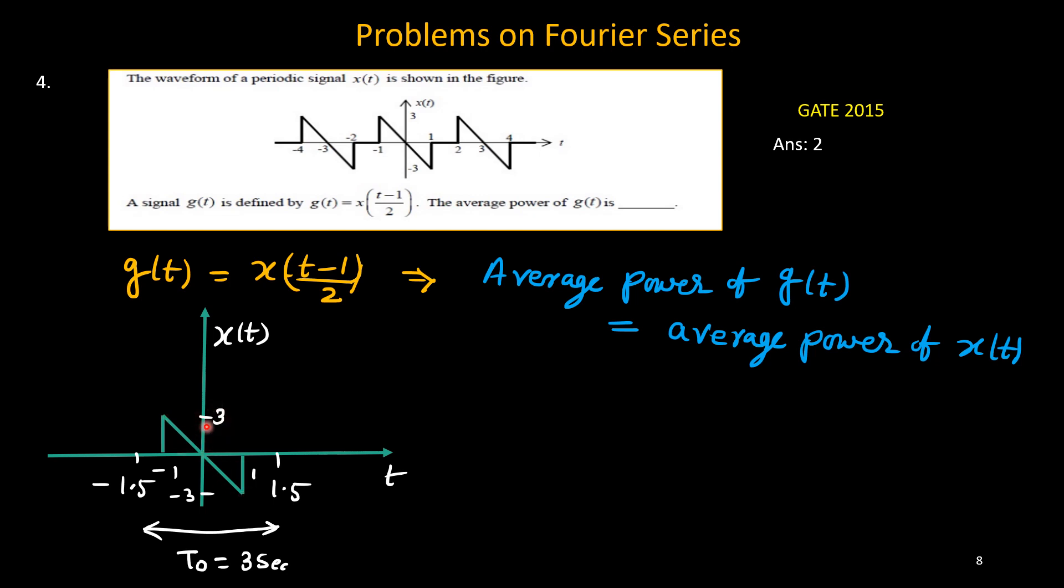So slope is minus 3t because 3 by 1, minus 3 by 1 increasing. So x(t) equals minus 3t in this range. And other side, other ranges, 1 to 1.5 is 0 and minus 1 to minus 1.5 is also 0.